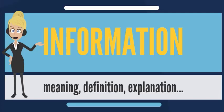Information resolves uncertainty. The uncertainty of an event is measured by its probability of occurrence and is inversely proportional to that. The more uncertain an event, the more information is required to resolve the uncertainty of that event.